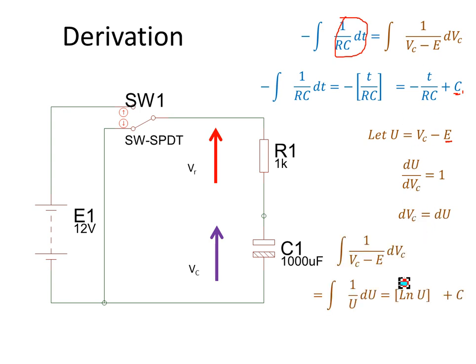The integral of 1 over Vc minus E becomes the integral of 1 over u du, which equals natural log of u plus C2.